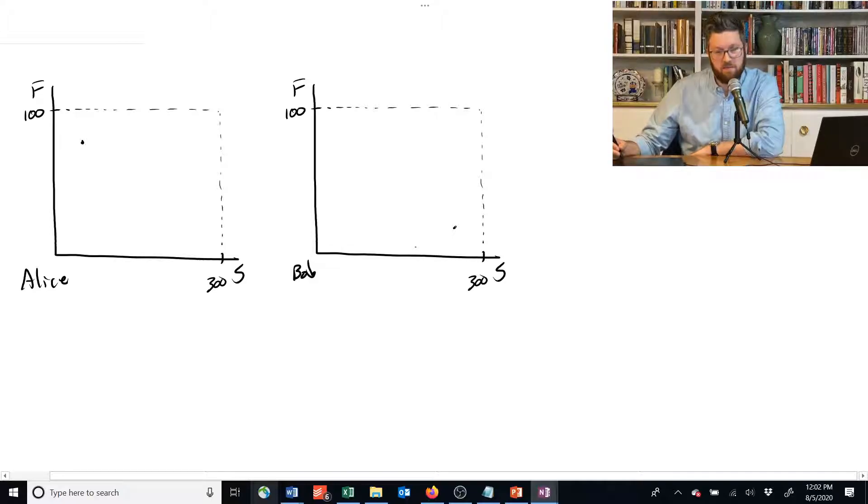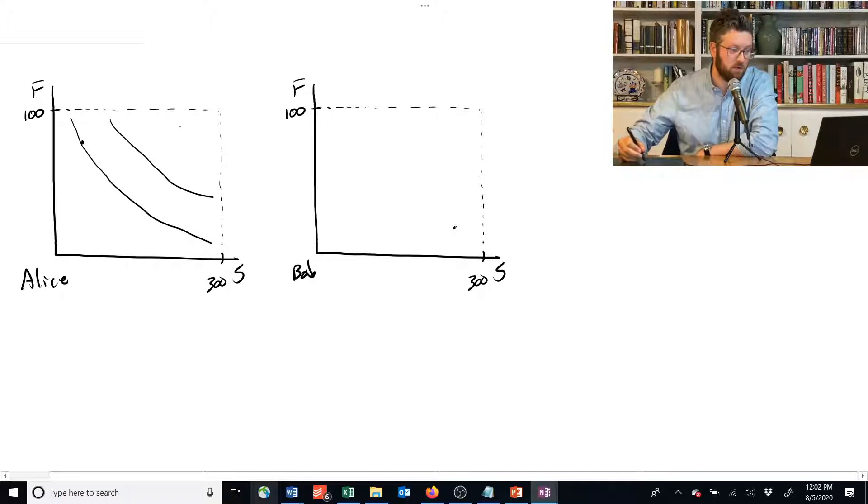They each have different indifference curves in this case. Let's make Alice's indifference curves kind of like this. So they're close to perfect substitutes, only have a little bit of a curve to them. And then we get in this corner, they start to curve a little more.